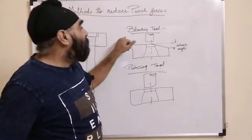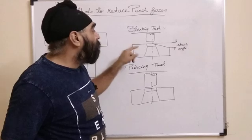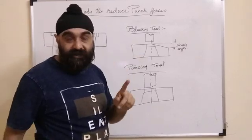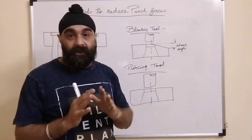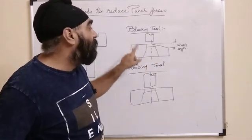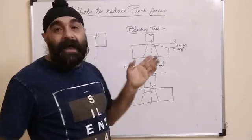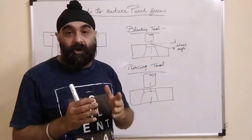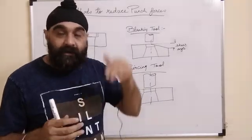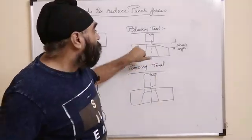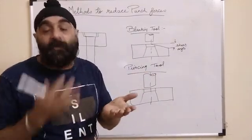When you are designing a blanking tool, the shear angle is given to the die and not on the punch. Remember this. It's a blanking tool and you need the stock, the part required is the stock and the slug will go inside, so the blanking tool will not change the geometry or bend your part.